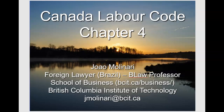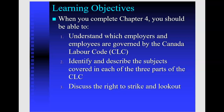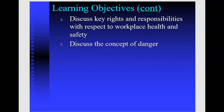This is Chapter 4 of our Employment Law course: the Canada Labour Code. The objectives for this chapter are to understand which employers and employees are governed by the Canada Labour Code — in other words, which are federally governed and regulated. We'll identify and describe the subjects covered in each of the three parts of the Canada Labour Code, revisit the right to strike and lockout from Chapter 3, and look at key rights and responsibilities regarding workplace health and safety, including the concept of danger under the Canada Labour Code.